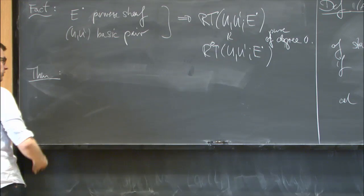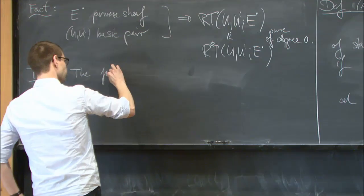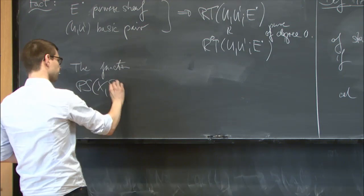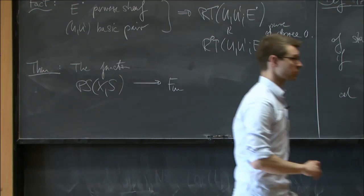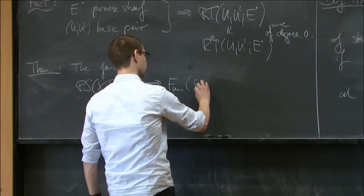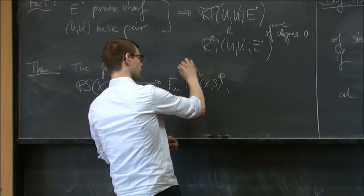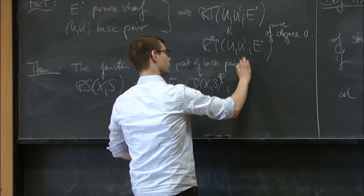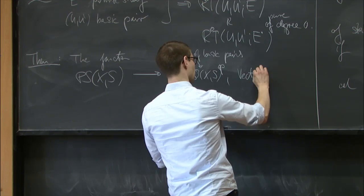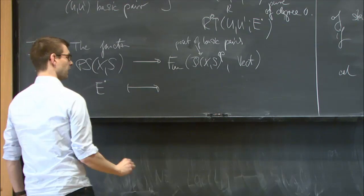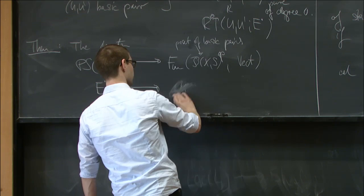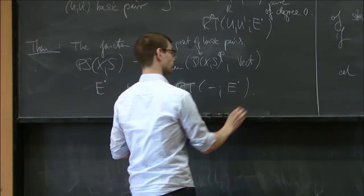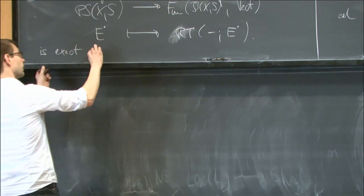Here's a theorem — not a very hard theorem, but conceptually it deserves the name. The functor obtained by taking perverse sheaves on (x, S) and sending them to pre-sheaves on the poset of basic pairs into vector spaces — by associating each perverse sheaf E to the functor taking R-gamma(dash) with coefficients in E — this functor is exact and fully faithful.